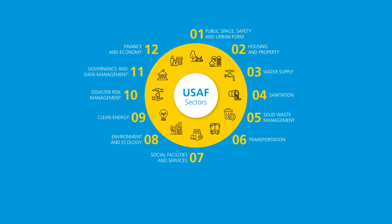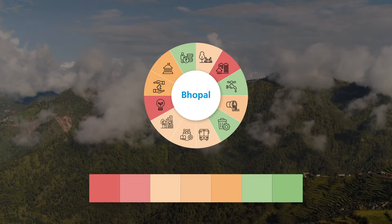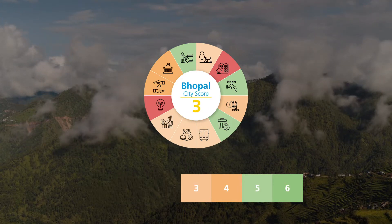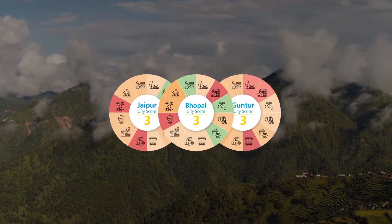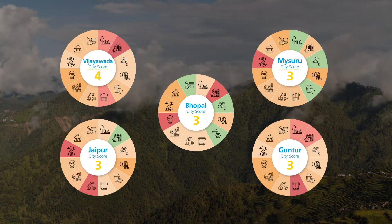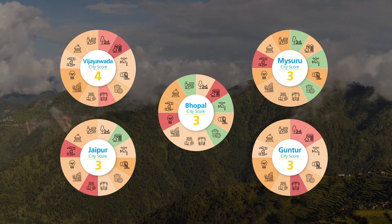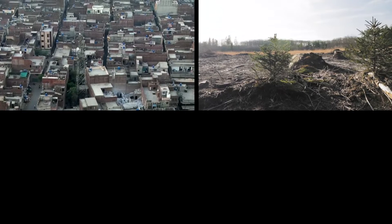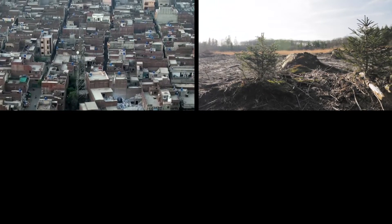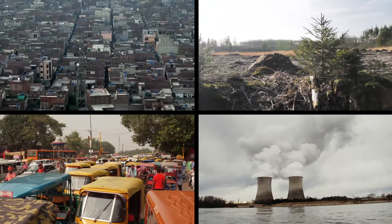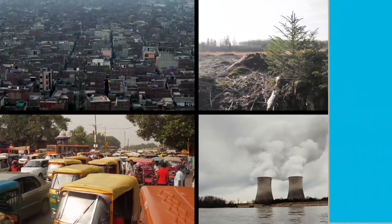In this assessment, every city's performance is scored on a seven-point scale. In its pilot application across five growing cities in India, evaluation using USAAF indicators revealed the prevalence of several challenges such as urban sprawl, endangerment of natural assets, rising greenhouse gas emissions, and poor urban mobility, amongst others.